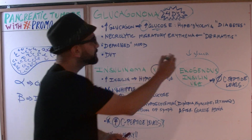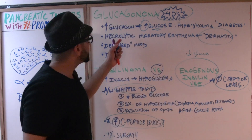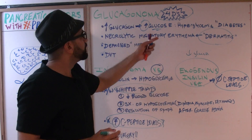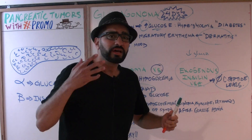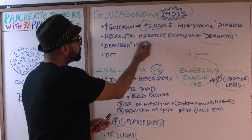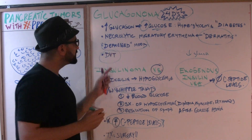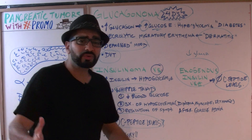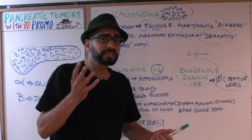The second D: dermatitis. The patient will have necrolytic migratory erythema, so the patient's skin is going to be affected. The third D: the patient's mood will be depressed. And lastly, DVT — deep vein thrombosis. That's it for glucagonoma: four D's.